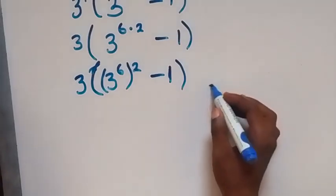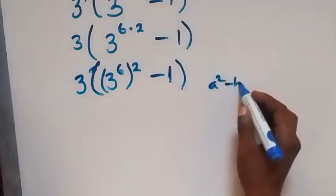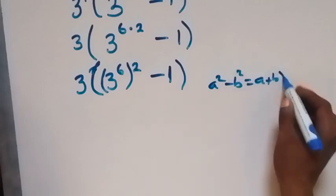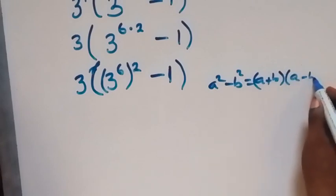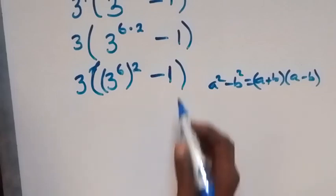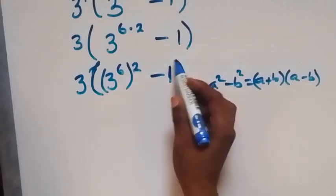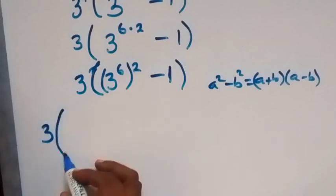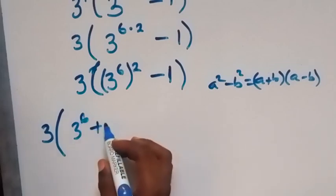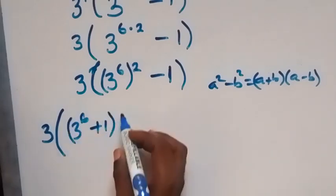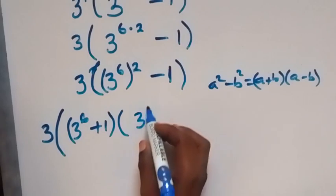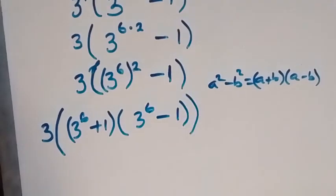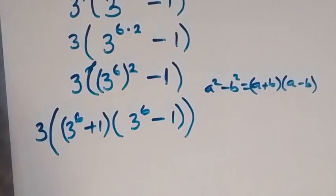Then minus 1. In the next step, we have this in the form of difference of two squares. When we have a squared minus b squared, this is the same thing as a plus b multiplied by a minus b. The 1 here is the same as 1 squared, so we can write this as 3 into bracket 3 raised to power 6 plus 1, then multiply by 3 raised to power 6 minus 1, applying the difference of two squares.